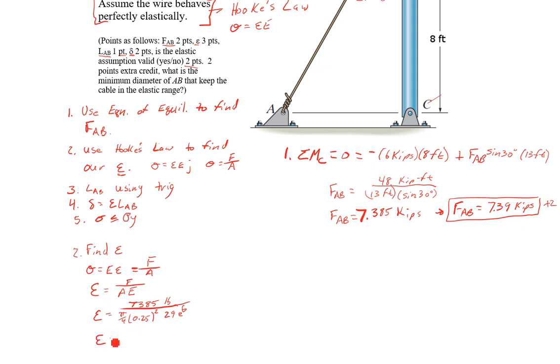If I carry that math out, I find epsilon is 0.005188 inch per inch, or to three significant figures, epsilon equals 5.19 times 10 to the negative 3 inch per inch. That gets us three points. We're applying Hooke's Law as well as stress equals F over A.